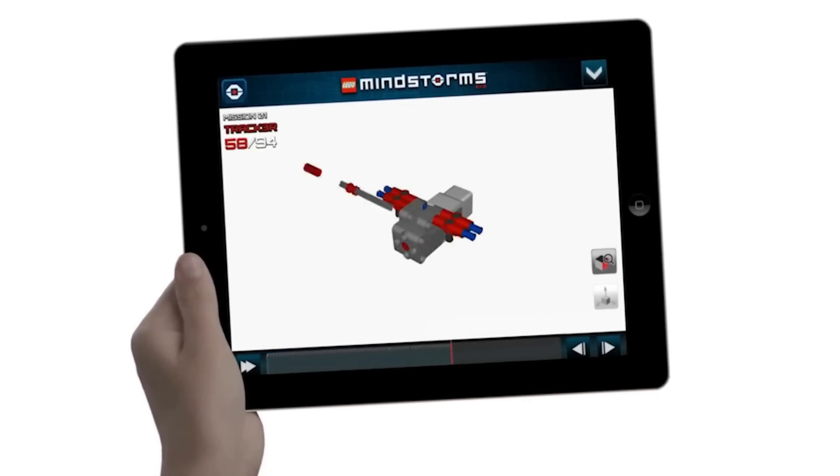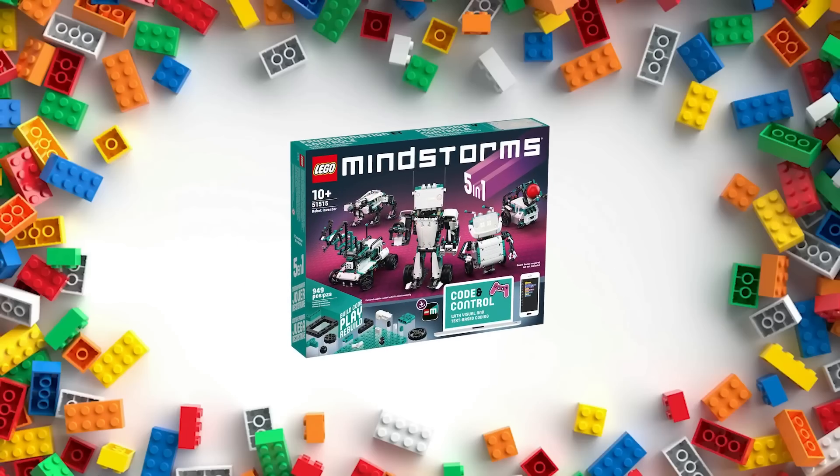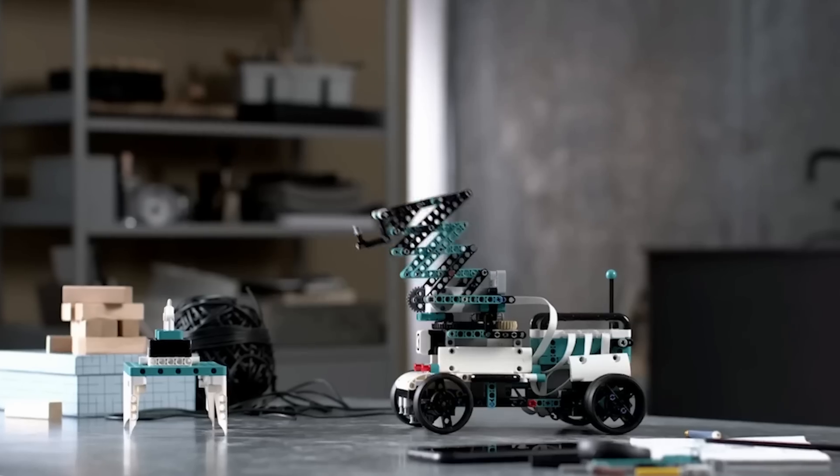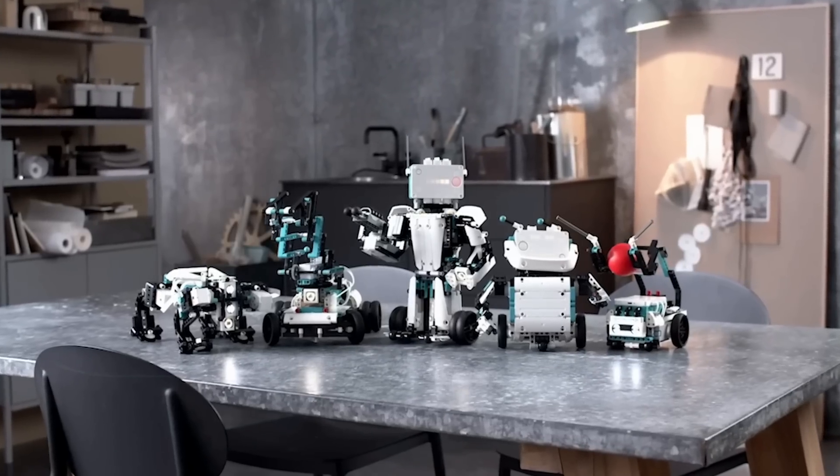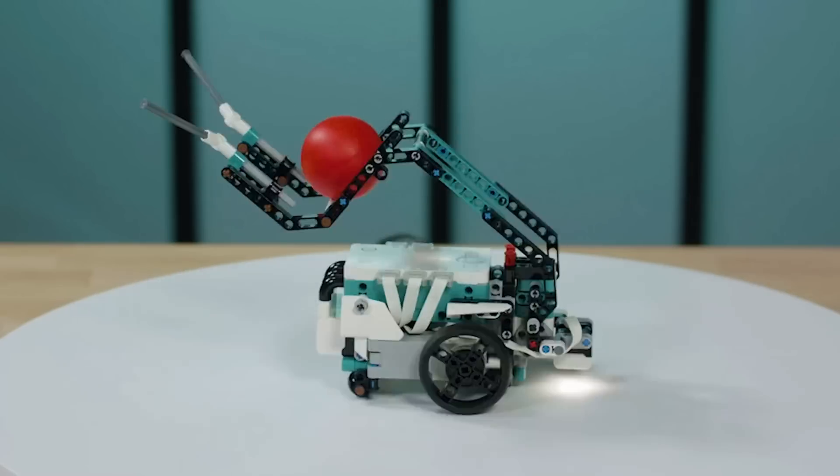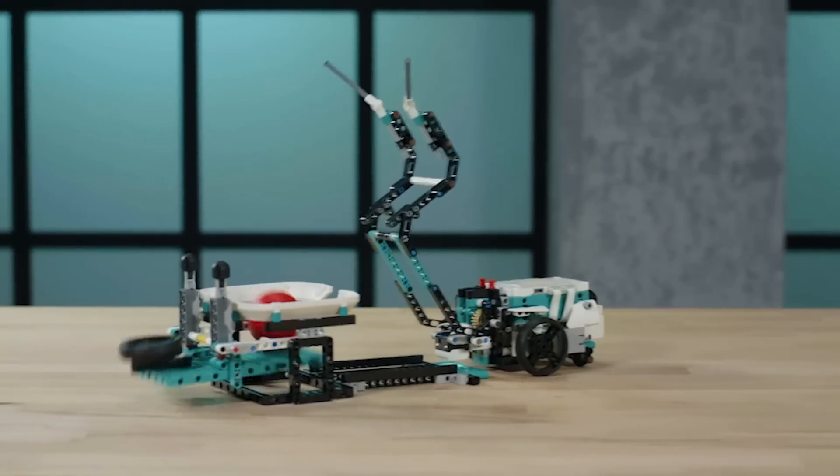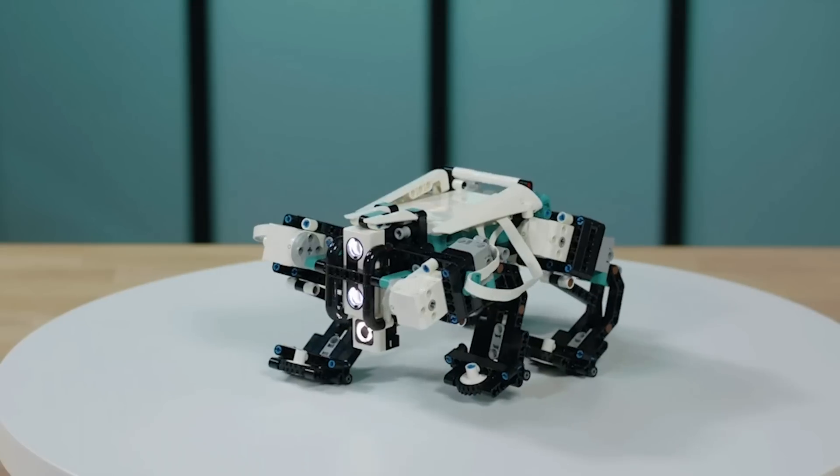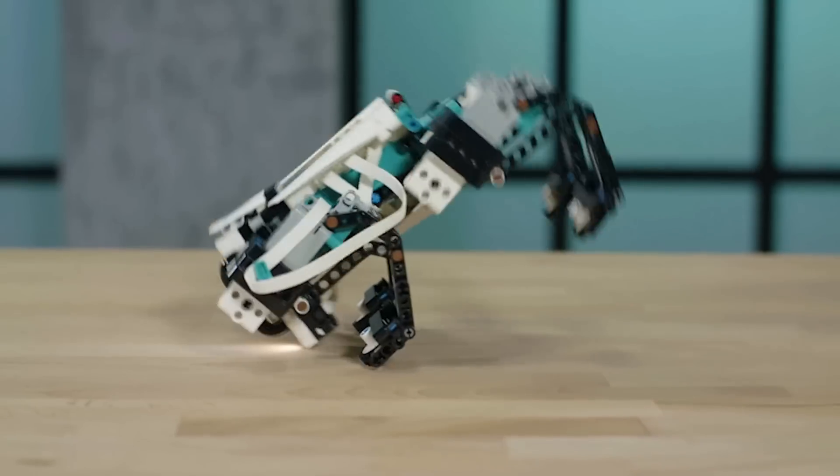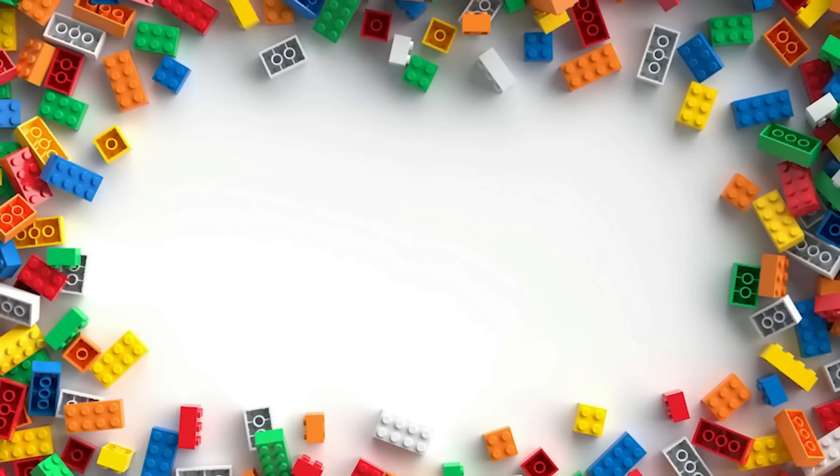The final major release for the Mindstorms line was set number 51515, Robot Inventor, from 2020, and included instructions for even more robots. The EV3 was a huge success for LEGO and hobbyists alike. The power, ease of use, and unlimited potential of these bricks made them a must-have for any fan of robotics. I've actually made an entire video on some of the most incredible LEGO creations ever made, and many of those used one or more NXT or EV3 bricks. I'll provide a link in the description if you want to check it out.